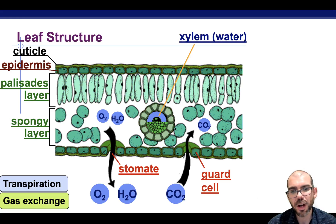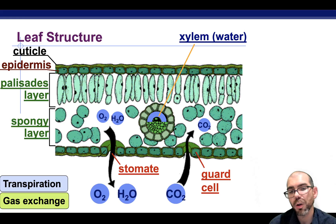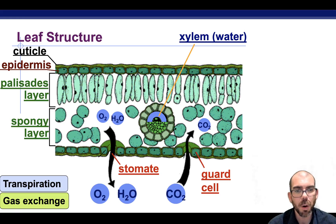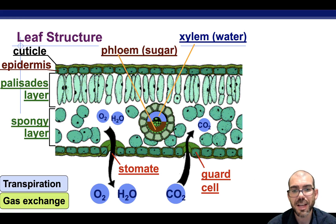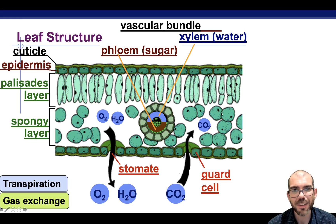In the middle of these leaves you'll find tubes that transport different materials obtained all the way from the bottom of the plant with the roots. One of those tubes is called the xylem — this is how water moves through a plant. The other is called the phloem — this is how food and nutrients move through the plant. Together we call them a vascular bundle.